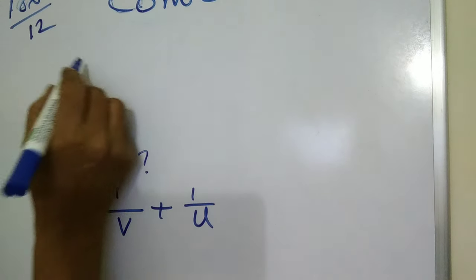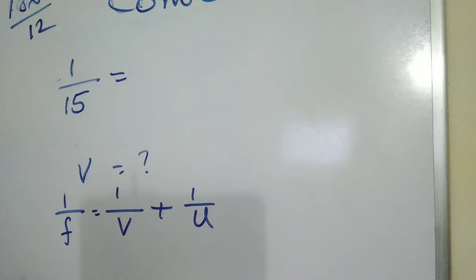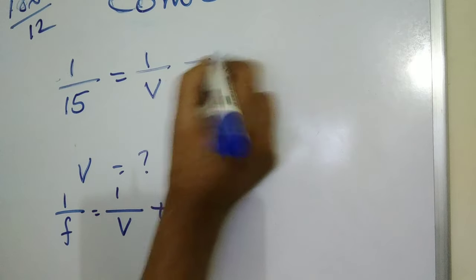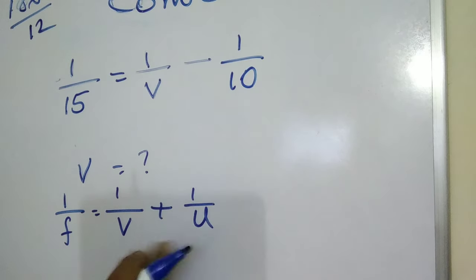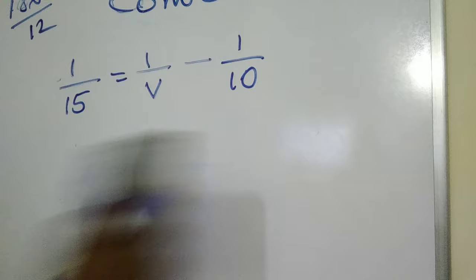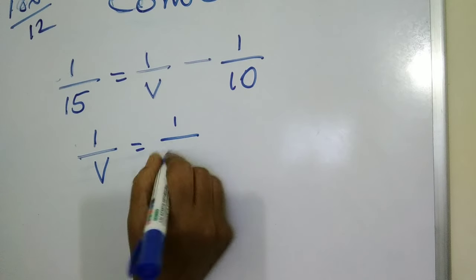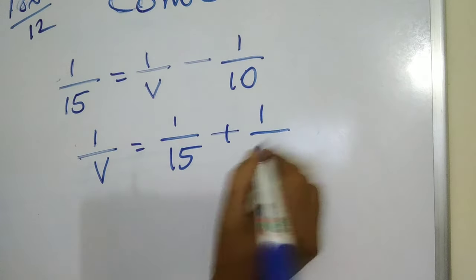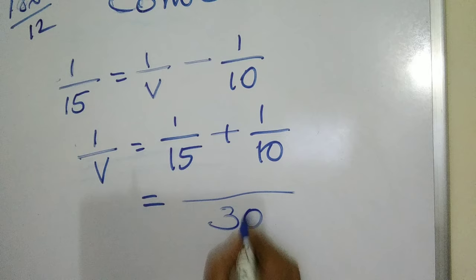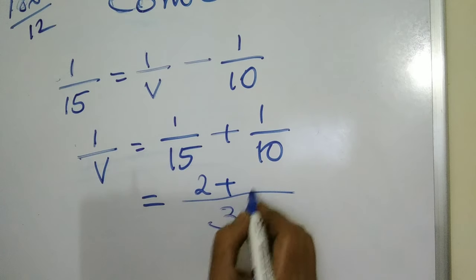1 by 15 equals 1 by v minus 1 by 10. Because u is minus, that is why this becomes minus. So what is 1 by v? It equals 1 by 15 plus 1 by 10. 30 is the LCM. 2 plus 3, 5 by 30.